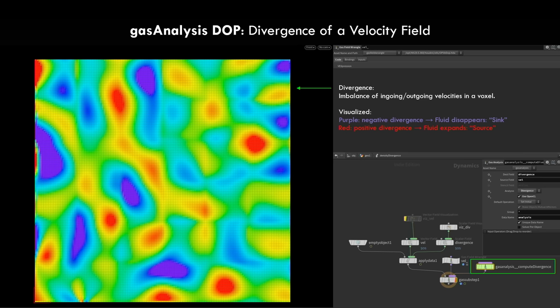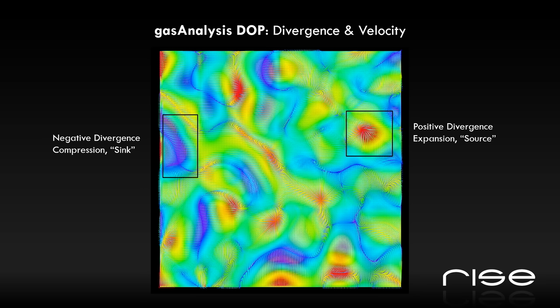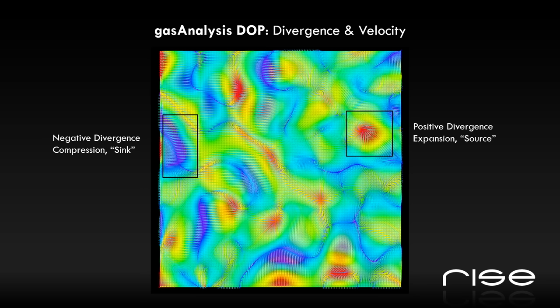This is the divergent velocity field — I'm computing the divergence of it and then visualizing it in the viewport. Divergence is just the imbalance of ingoing and outgoing velocities inside of a voxel. If you have outgoing velocities, you have an expansion; if you have inwards-pointing velocities, you have a negative divergence — so it's a sink. I'm computing the divergence here with the gas analysis stop off my velocity field and writing it into the divergence. Here you can see the clear relation: on the top right, some positive divergence where fluid would expand; on the screen left, it sinks with negative divergence. The lines are velocity trails and the colors are the measured divergence.